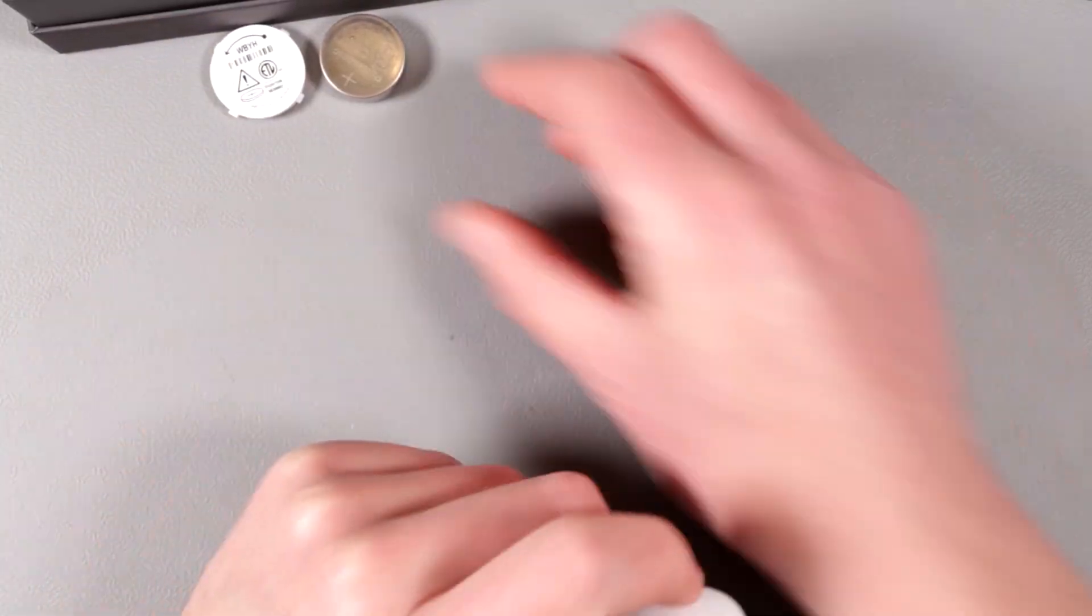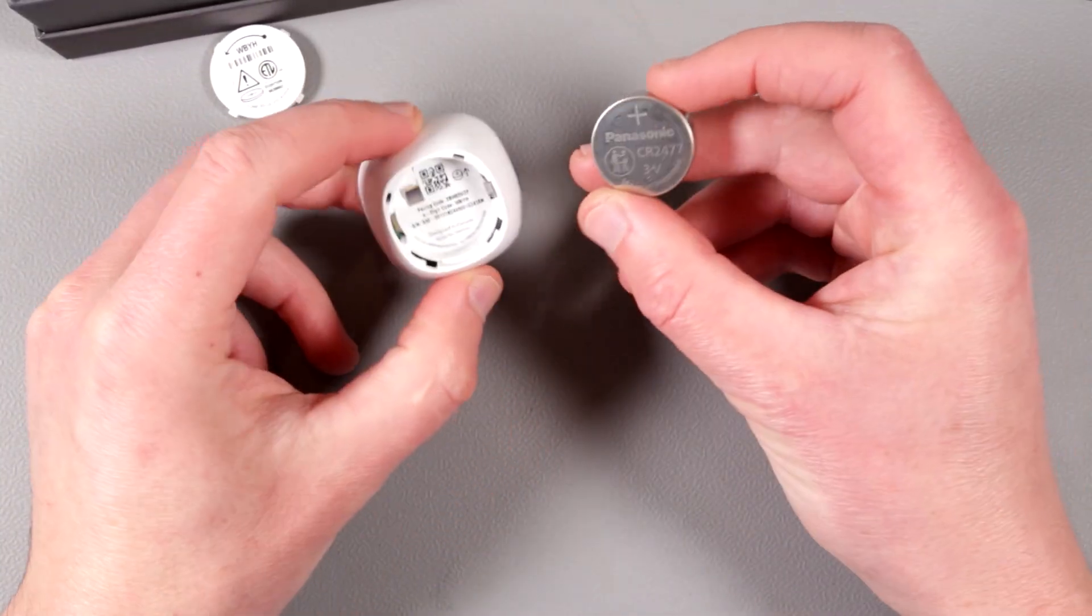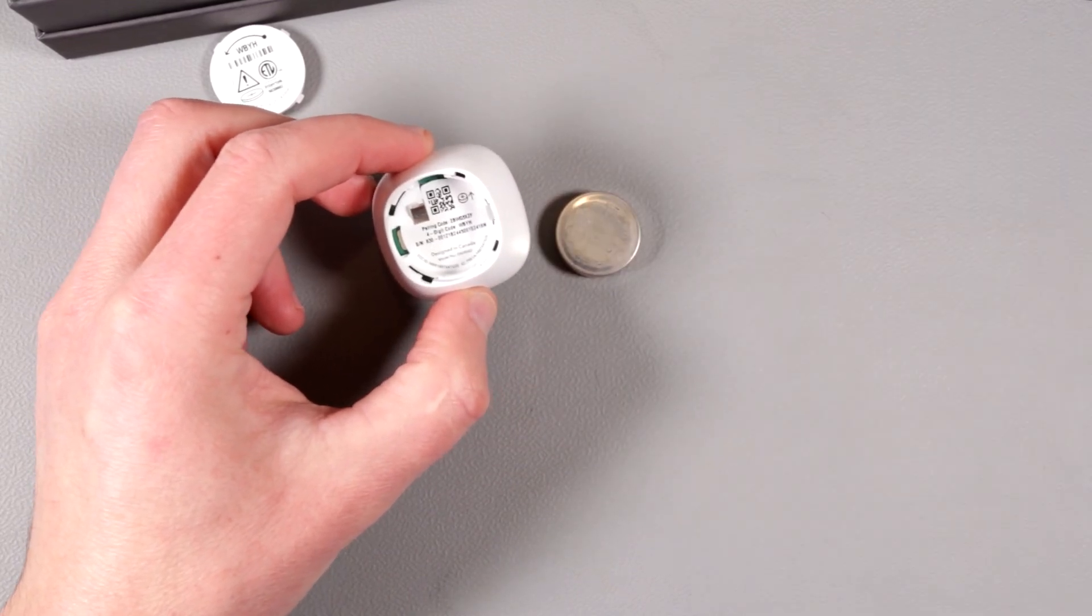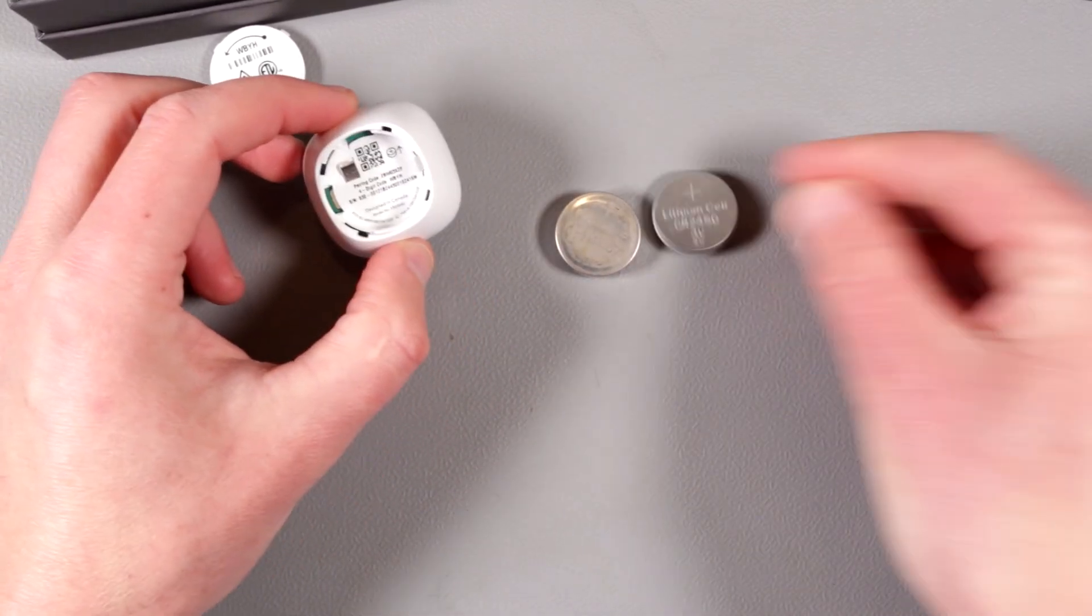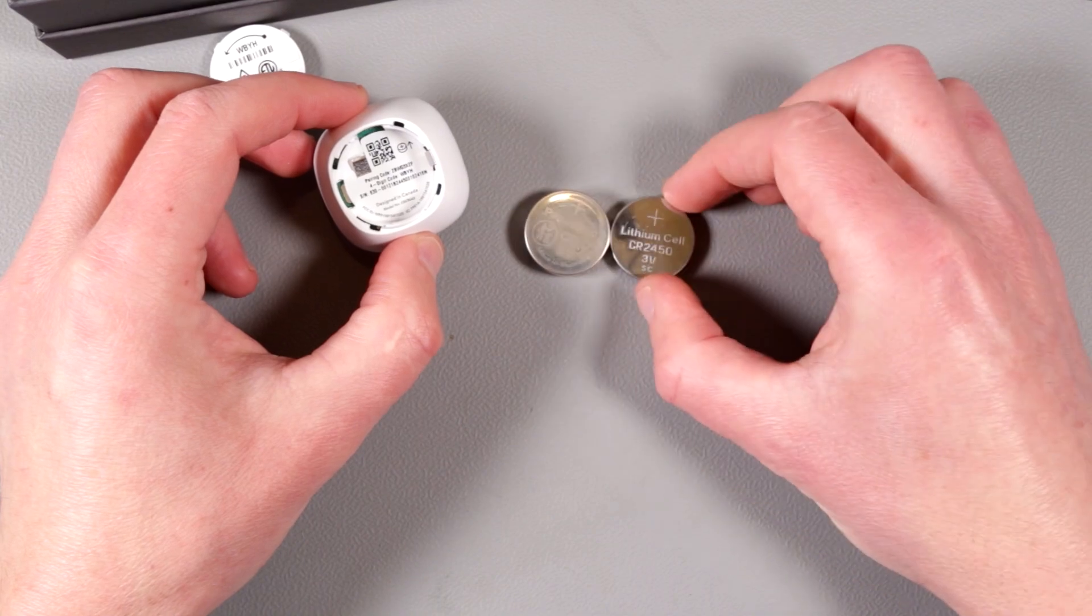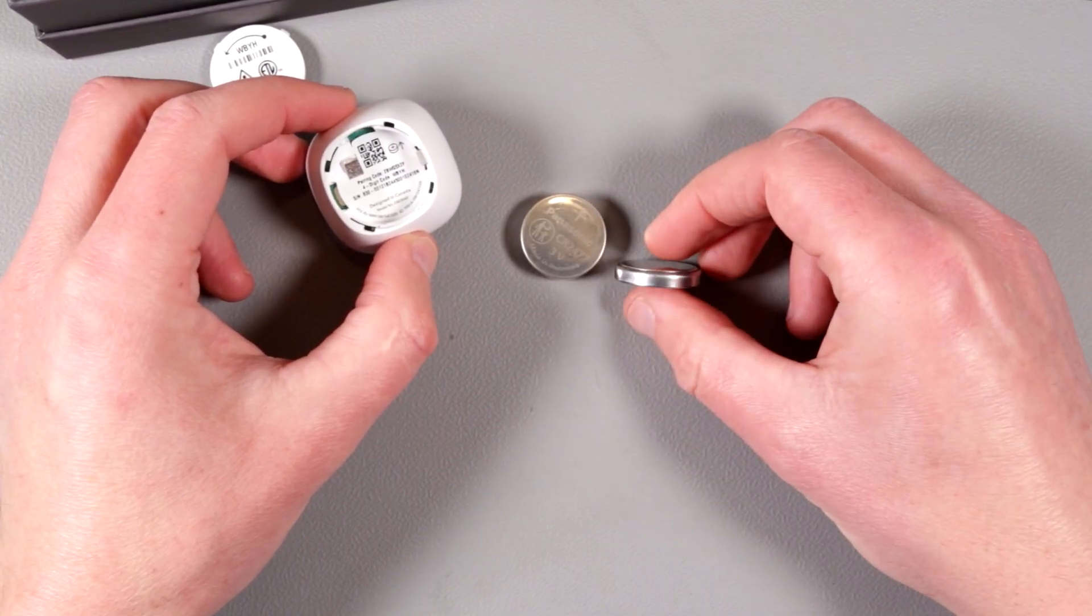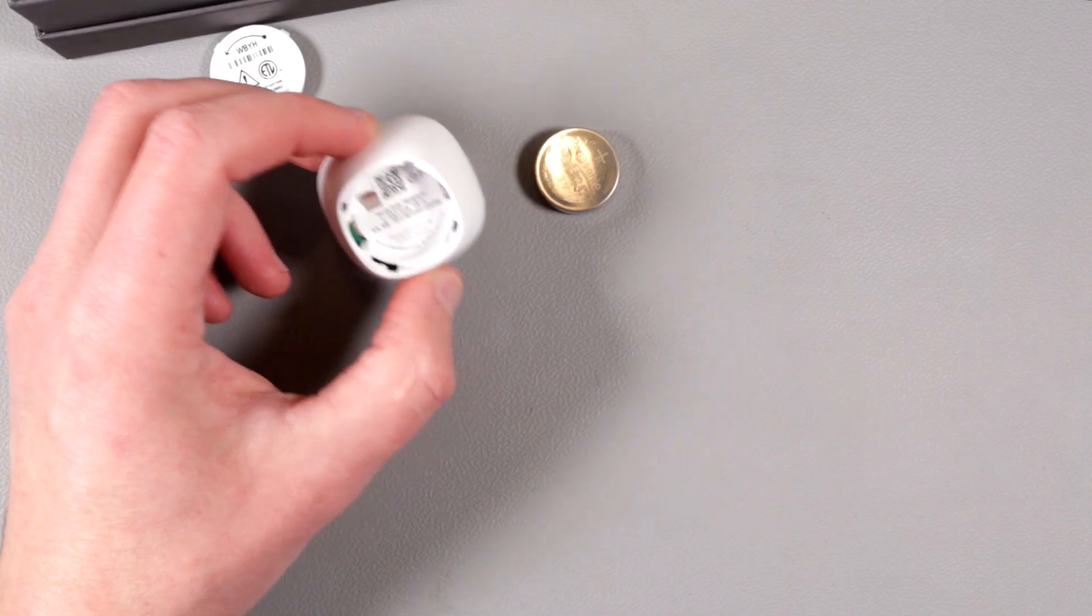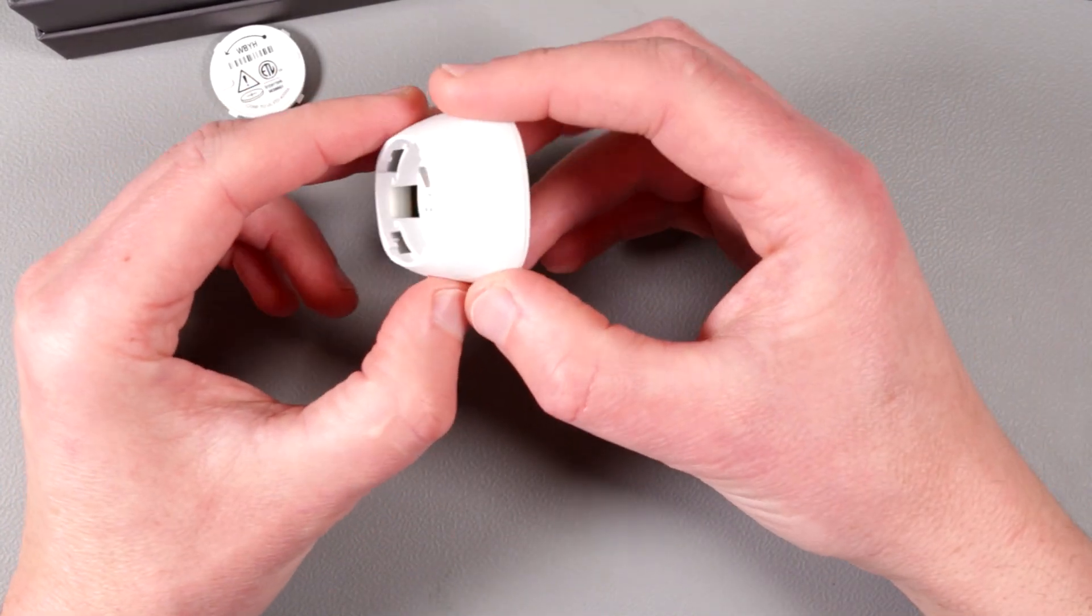I also love this—here it says CR 2477, and I have CR 2450s here, which is as wide but not as thick. This is pretty cool. I didn't know such a thing even existed.